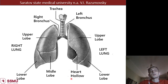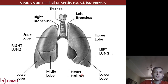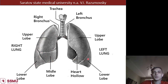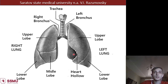First of all we should start from normal anatomy of a lung. In normal condition, lung consists of two main lungs - the left one and the right one. The left lung consists of two lobes and the right one consists of three lobes: lower, upper and middle lobe. In the left lung we can see only lower and upper lobes, and in this part we can see the heart in normal conditions.